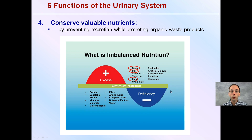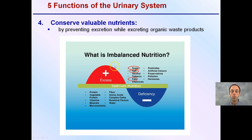The urinary system also helps conserve valuable nutrients. It can prevent excretion of waste products if there is a deficiency, or it can increase excretion if there's determined to be an excess of nutrients. This is a way to stay in that optimum nutrition homeostasis — reducing things if too high, but also bringing them up if too low.